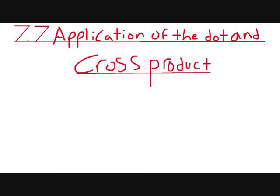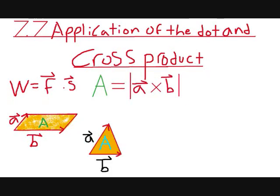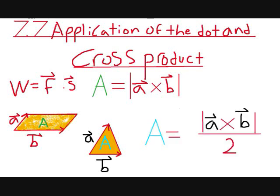7.7, application of the dot and cross product. One of the main applications is for work, which is force dot displacement. The cross product is very useful for determining the area of a parallelogram or a triangle with sides of vector A and B. The area of a parallelogram is the magnitude of the cross product between A and B, and the area of a triangle is the magnitude of the cross product of A and B divided by 2.